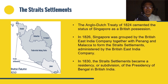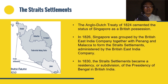The Anglo-Dutch Treaty of 1824 cemented Singapore's status as a British possession, carving up the Malay archipelago between the two colonial powers, with the area north of the Straits of Malacca — including Singapore — falling under Britain's sphere of influence. In 1826, Singapore was grouped together with Penang and Malacca by the British East India Company to form the Straits Settlements. In 1830, the Straits Settlements became a residency under the presidency of Bengal in British India.